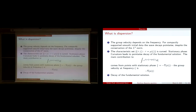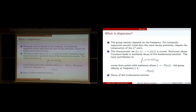Stationary phase then tells us that the curvature leads to pointwise decay of the fundamental solution. For that, one looks at the fundamental solution given by an oscillatory integral. The leading part comes from the point where the phase becomes stationary, which is where x/t equals minus grad P(xi). So the group velocity is given by minus the gradient of P(xi), and there is a direct relation between the characteristic set and this decay.